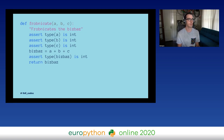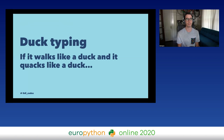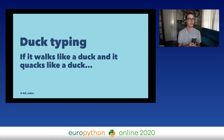So instead, in Python, we do something called duck typing: if it walks like a duck and it quacks like a duck, it is probably a duck. We rely on how the variable is used to determine what type it should be.